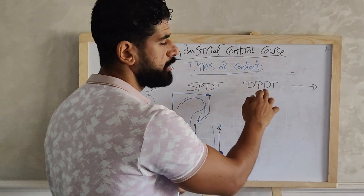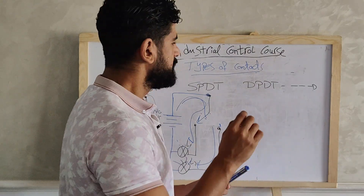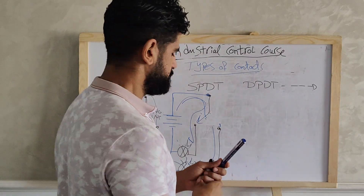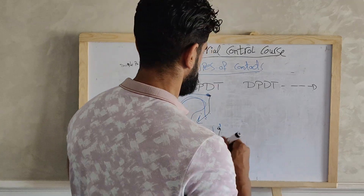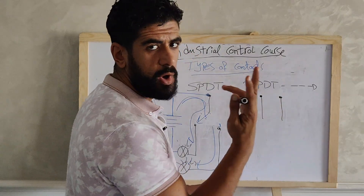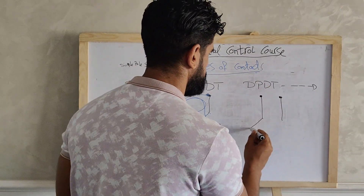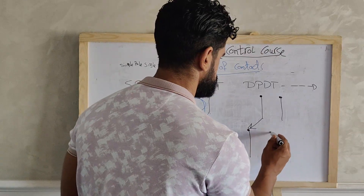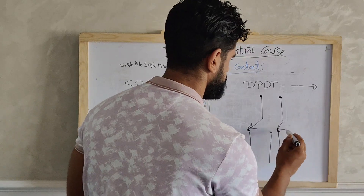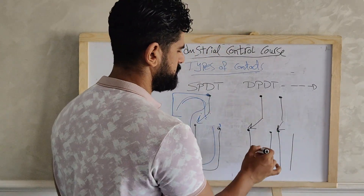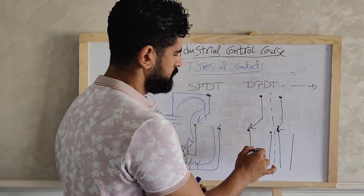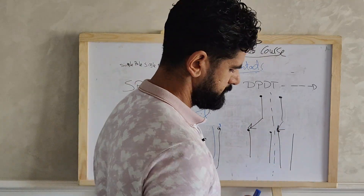A double pole double throw switch means double input and double output for each input. So we have two inputs, and each input has two outputs. This is the meaning of a double pole double throw switch.